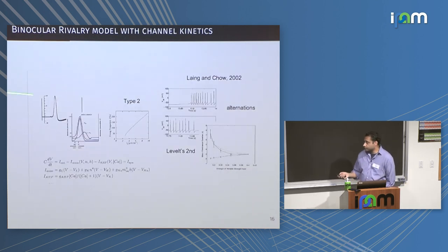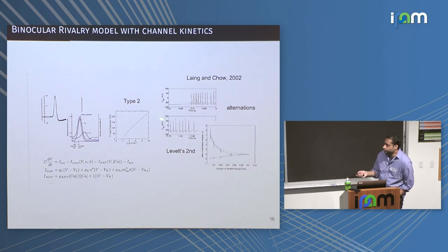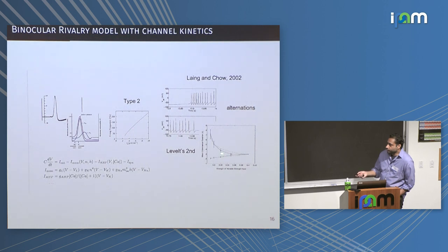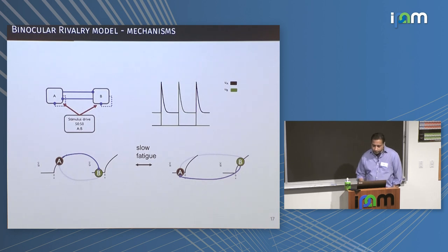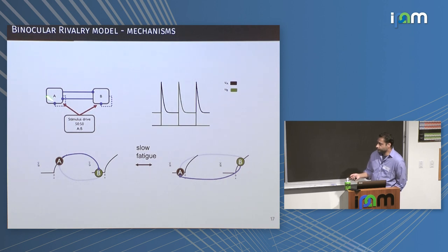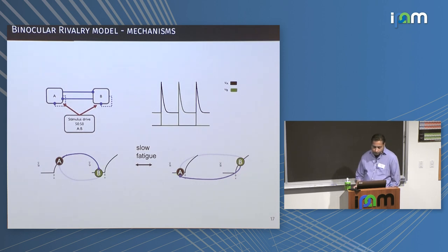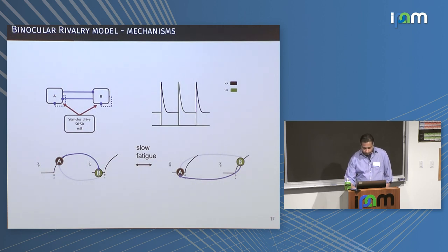Laing and Chow showed that their Hodgkin-Huxley model produces alternations in rivalry — but getting the model to naturally reproduce Levelt's propositions is also required. To understand why the model achieves this, we look at a reduced system with gain functions. You get winner-take-all behavior where one population is super-threshold, puts mutual inhibition on the other making it sub-threshold, then a slow fatigue process results in a switch. How that switch happens is important for understanding why Levelt's propositions are observed.